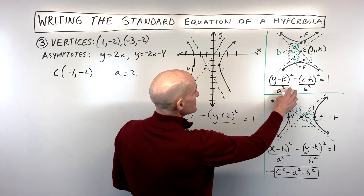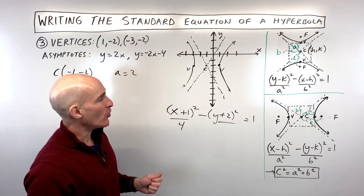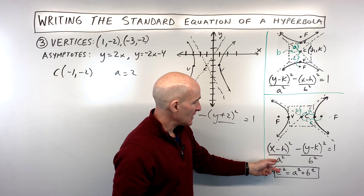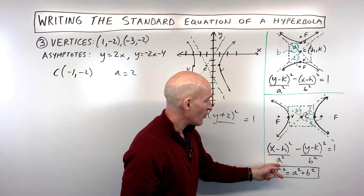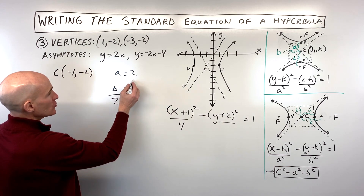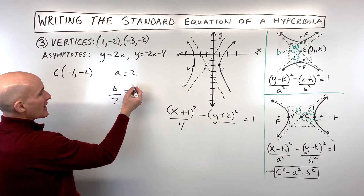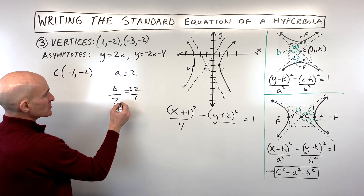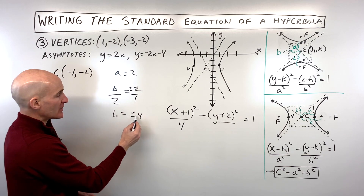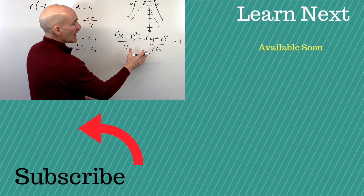The slope of the asymptote is b/a when the hyperbola opens horizontally. Here, b/a = b/2 = ±2 (the slope of our asymptote). Cross-multiplying gives b = ±4, so b² = 16 (since (-4)² = (+4)² = 16). That gives us the complete standard form of the equation of the hyperbola.